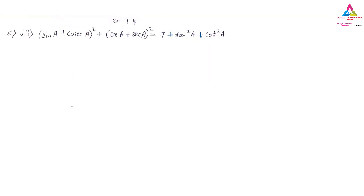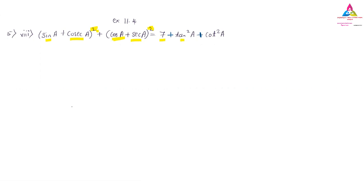Coming to exercise 7.4, question 8: we need to prove that (sin A + cosec A)² + (cos A + sec A)² equals 7 + tan²A + cot²A. The right-hand side has 7, tan²A, and cot²A. We need to prove this identity, so let us write down the left-hand side first.